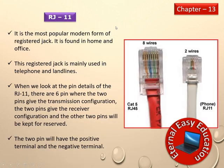The first type is RJ11. It is the most popular form of a Registered Jack, found in homes and offices, and mainly used for telephones and landlines, as well as broadband connections. Looking at the pin details of RJ11, there are six pins: two pins provide the transmission configuration, two pins provide the receiver configuration, and the other two pins are reserved. The two active pairs carry positive and negative terminals.